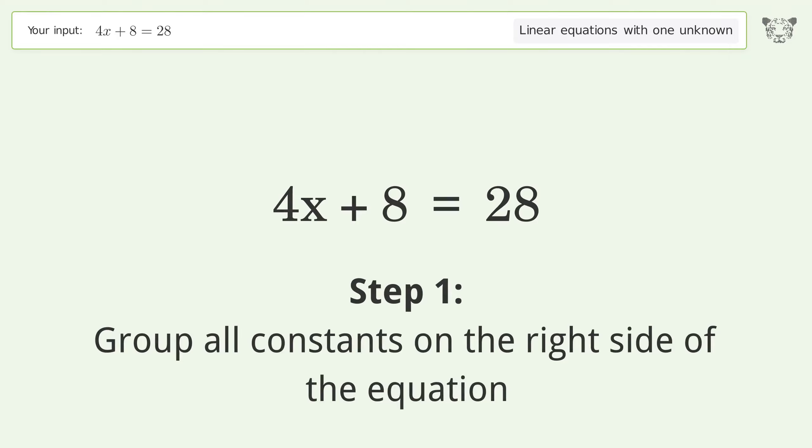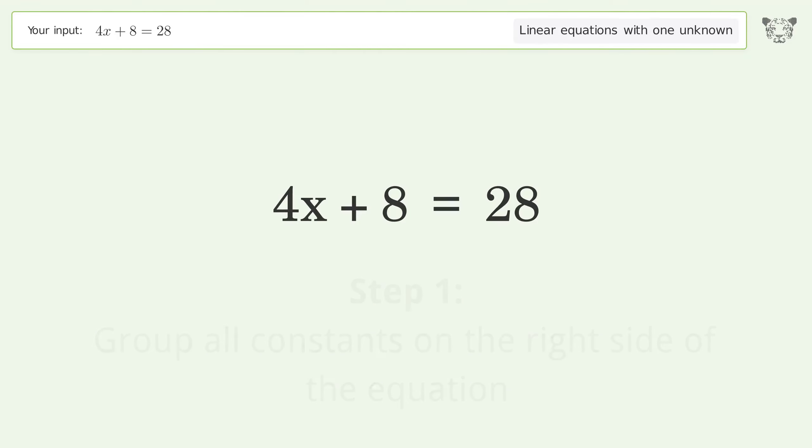Group all constants on the right side of the equation. Subtract 8 from both sides. Simplify the arithmetic.